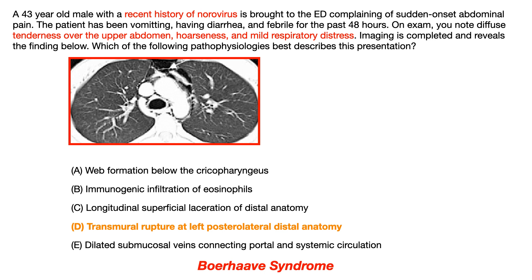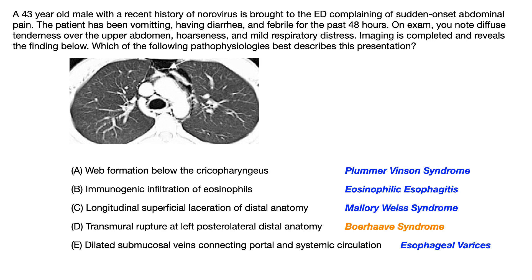Even if you weren't sure of the correct answer, you could eliminate incorrect choices. Choice A — web formation below the cricopharyngeus — refers to Plummer-Vinson syndrome, the clinical triad of glossitis, esophageal webs, and iron deficiency anemia. If the question writer wanted you to pick Plummer-Vinson, they would have shown the web on imaging, given labs depicting iron deficiency anemia, or described atrophic glossitis.